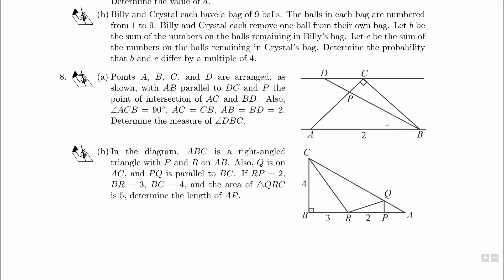So I got two parts, both written. Points A, B, C, and D are arranged as shown, with AB parallel to DC, and P is the point of intersection of AC and BD. Also, angle ACB is 90 degrees, AC equals CB, and AB equals BD, both equal to 2. Determine the measure of angle DBC, this little angle right here.